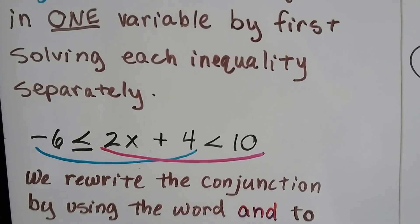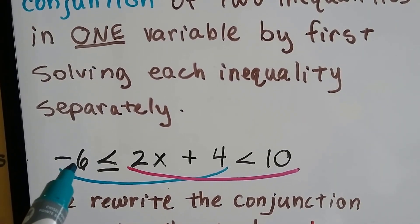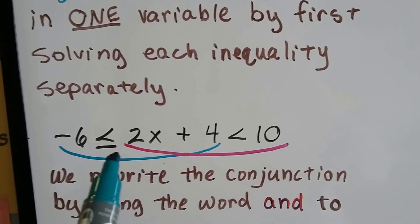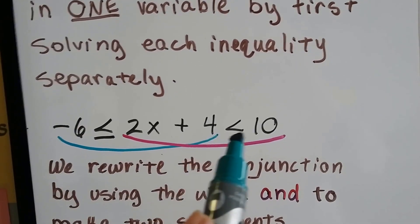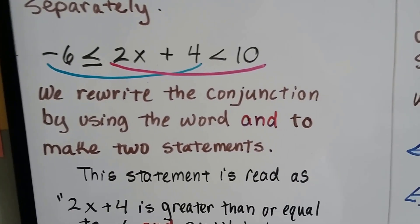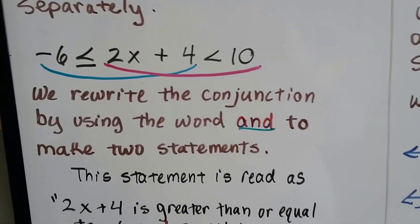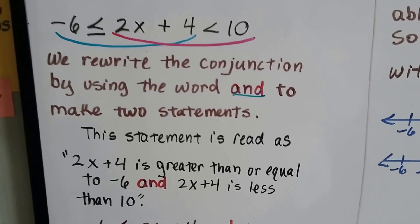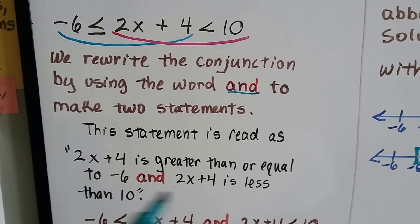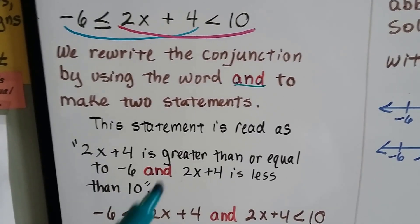Now, look at this one. Even though it starts with this negative 6, we would read it as 2x plus 4 is greater than or equal to negative 6 and less than 10. We rewrite the conjunction by using the word AND to make two statements. The statement is read as 2x plus 4 is greater than or equal to negative 6 and 2x plus 4 is less than 10.